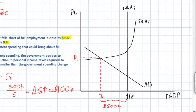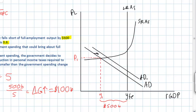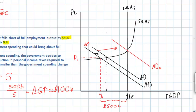Looking at our graph, a 100 billion dollar increase in government spending will be multiplied and result in a 500 billion dollar increase in aggregate demand. A government stimulus of only 100 billion dollars shifts AD out to AD1. The immediate effect is a relatively small increase in national output, but following the multiplier effect, aggregate demand shifts out by the full 500 billion dollars and the economy returns to its full employment level of output.